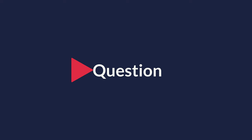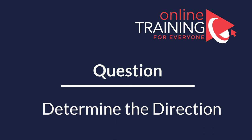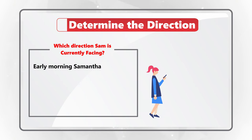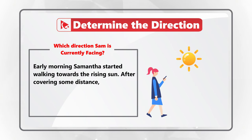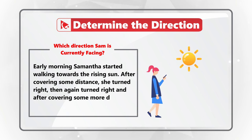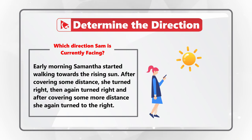Here is an exceptional question to help determine how well you can navigate and determine direction. Early morning, Samantha started walking toward the rising sun. After covering some distance, she turned right, then again to the right, and after covering more distance, she again turns to the right. Which direction is Sam facing right now?